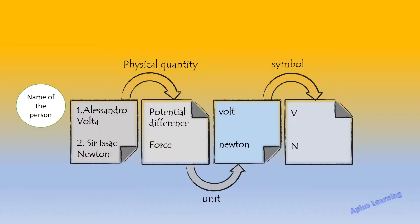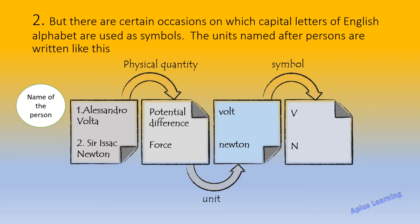But there are certain occasions on which capital letters of the English alphabet are used as symbols. This happens when the units are named after persons. For example, the unit of potential difference is volt, and the symbol 'V' is written in capital letter — named after the famous Italian physicist Alessandro Volta. Similarly, the unit of force is newton, and its symbol is written as capital 'N', named after the famous scientist Sir Isaac Newton.